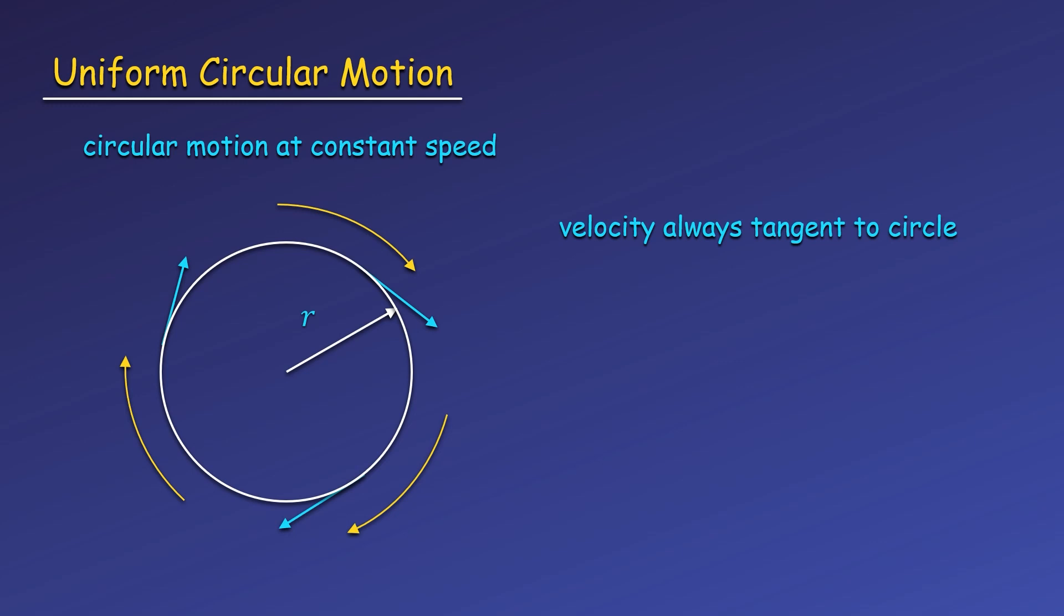Since our objects in uniform circular motion will have a constant speed, we can easily find how fast it is moving. Speed is just distance over time. When an object has gone around its circular path one complete revolution, it has traveled a distance equal to the circumference of that circle. The time to complete one full revolution, we will give a special name called the period.